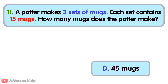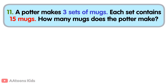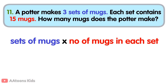Forty-five mugs. To find the total number of mugs, multiply the number of sets by the number of mugs in each set. Total number of sets is three. Now, three multiplied by fifteen is forty-five. So, the potter makes forty-five mugs in total.